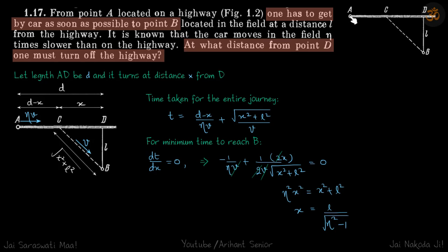So a person is in the car here and he can go on the highway and this bottom area is field. So he has to make a turn towards B somewhere such that the time taken for him to reach B is minimum.